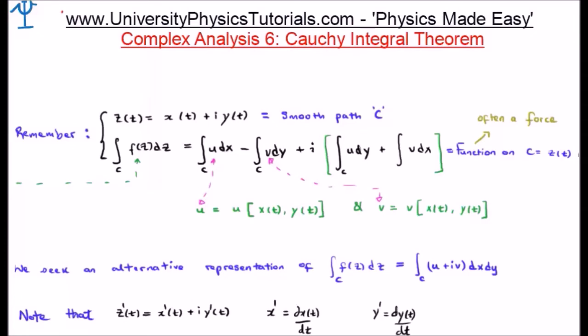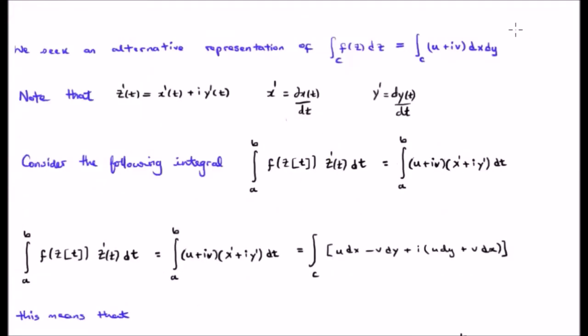So we see an alternate representation of this line integral. The line integral written in its simplest form is the line integral of f(z)dz equals u plus iv integrated dx dy. I've written that at the top right of your screen.